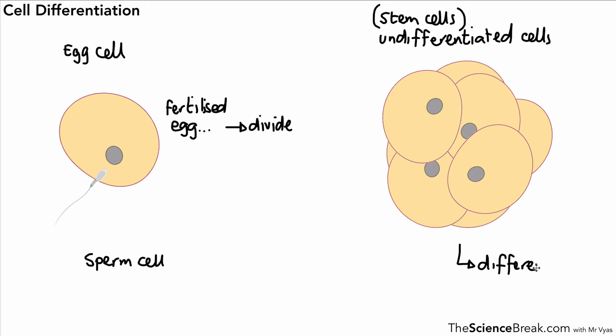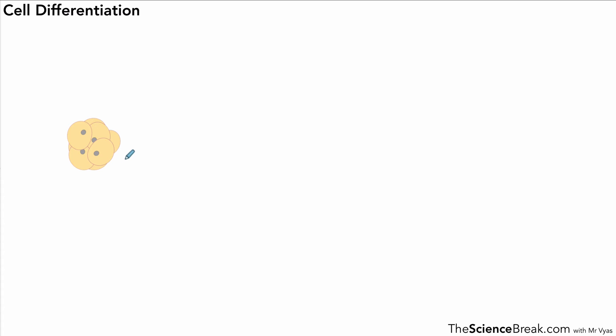The next stage is when the cells actually begin to differentiate. This happens very early on in development. The eight-cell stage is usually reached by about three days where the cells are all very similar, but after that they start to develop into the kinds of cells they need to be. After about three days the undifferentiated cells begin to differentiate.